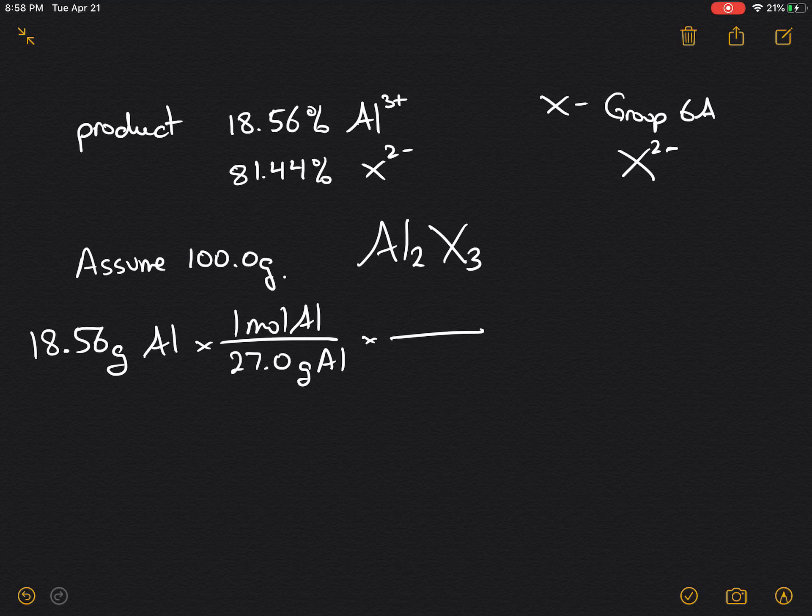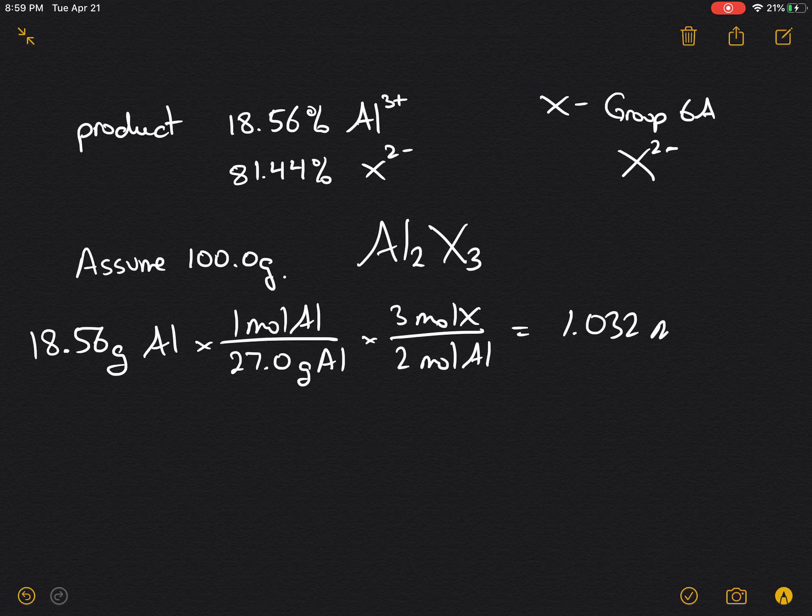And we can use our stoichiometry. There are two moles of aluminum per three moles of element X, and this will yield 1.032 moles of element X.